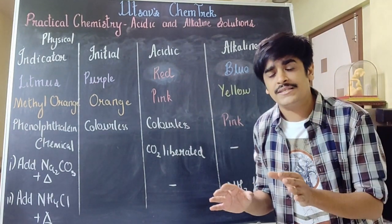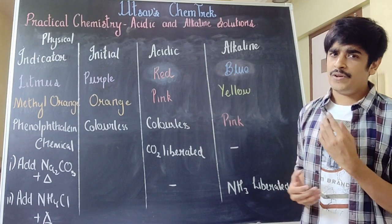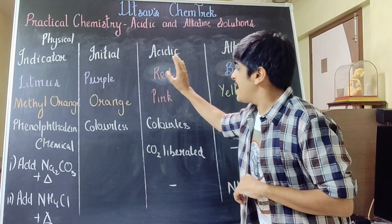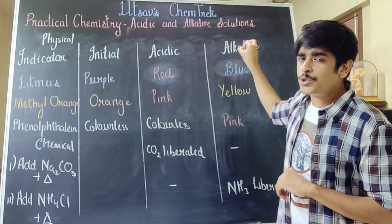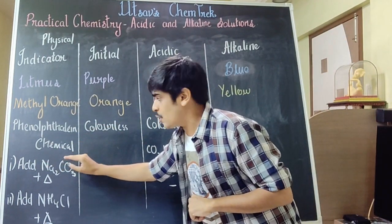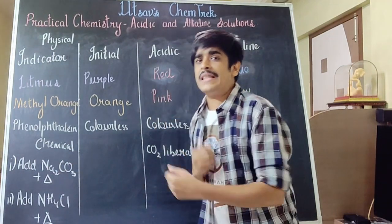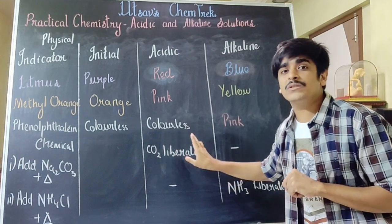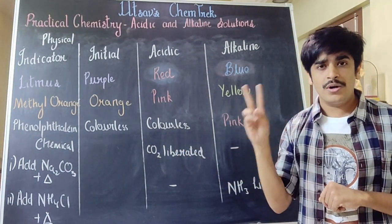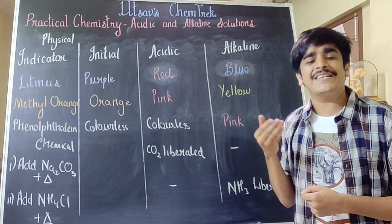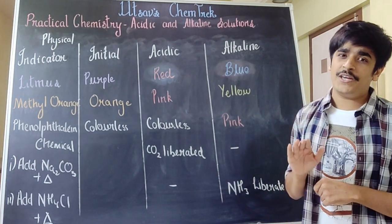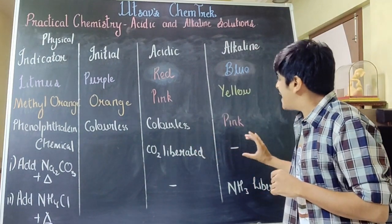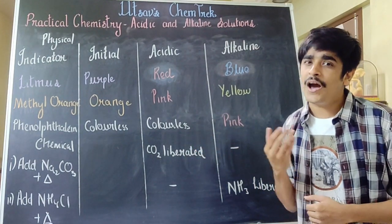These are the physical tests. The chemical tests are relatively better and more important. If you have to differentiate between an acid and an alkali, you will add sodium carbonate as a salt and heat it slightly. Only in an acidic solution will carbon dioxide gas be liberated. The gas is colourless, odourless, has absolutely no effect on acidified KMnO4 and acidified K2Cr2O7, but it does turn lime water milky. No such gas will be liberated from an alkaline solution.